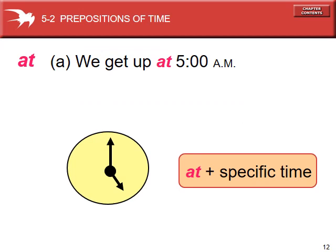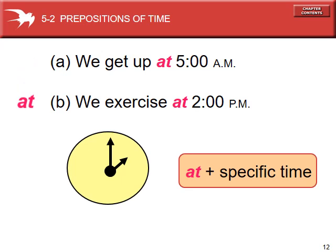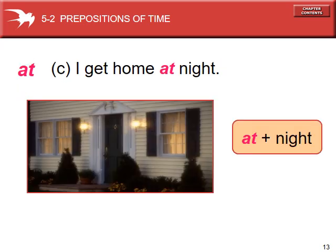The first preposition of time we want to talk about is "at". It is used in two different ways. One way is with a specific time on the clock: we get up at 5 a.m., we exercise at 2 p.m. But the other way "at" is used is with the word "night" — and this is an exception. Night is not a specific clock time; it's a long period of time. But in English, we use "at" for night — don't ask me why, but we do.